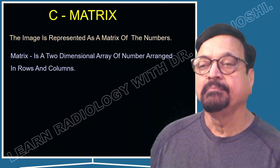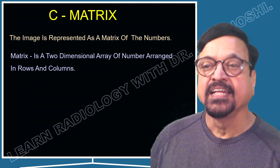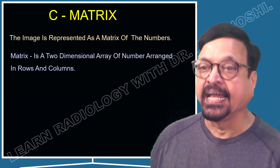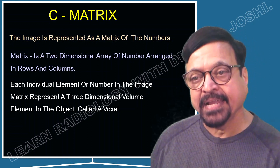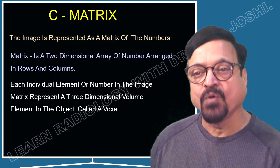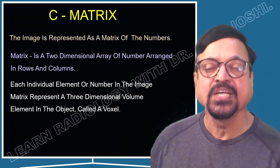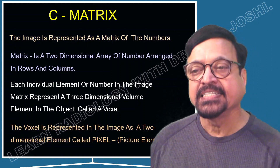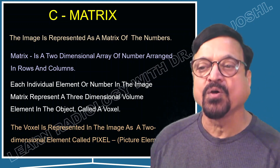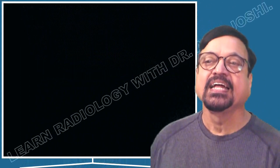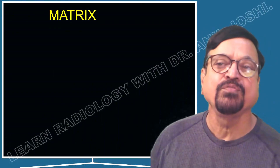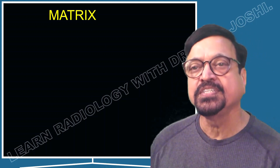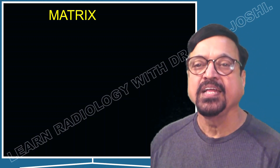Now we come to the matrix, the main topic of this lecture. The image is represented as a matrix of numbers — a two-dimensional array arranged in rows and columns. Each individual element in the image matrix represents a three-dimensional volume element in the object, called a voxel. The voxel is represented in the image as a two-dimensional element called a pixel. If you find pixel and voxel difficult to understand, there is a separate lecture covering full details — please visit the website and imaging gallery or our YouTube channel.